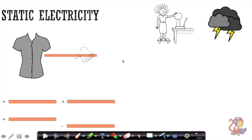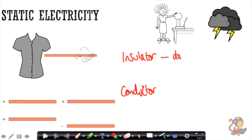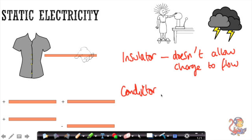Let's introduce a couple of key words: insulator and conductor. These are opposites of each other. An insulator is something that doesn't allow charge to flow easily, and a conductor is something that allows charge to flow.